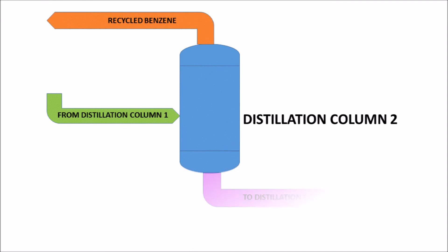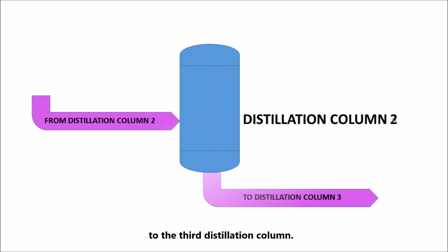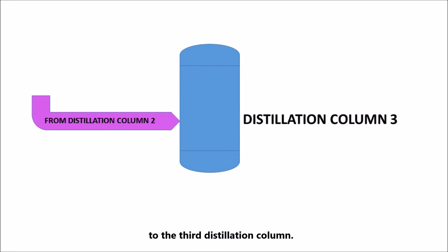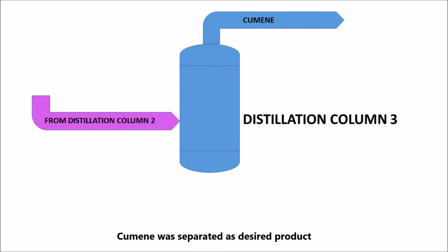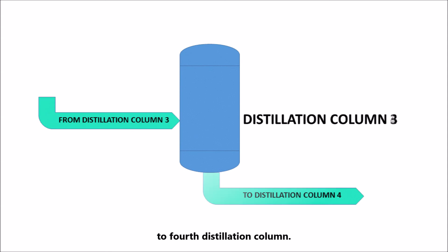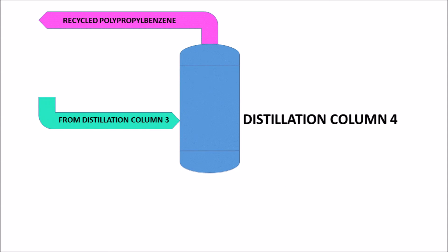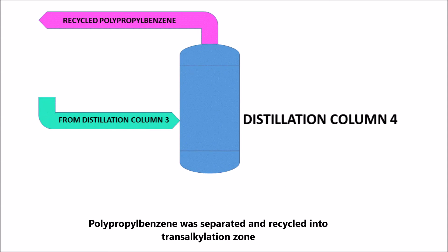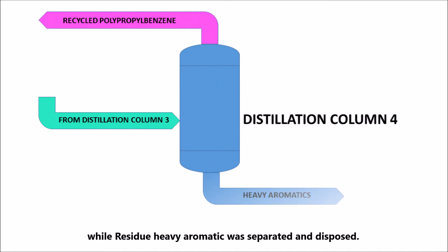Residue product was transferred to the third distillation column. Cumene was separated as the desired product, and residue product was transferred to the fourth distillation column. Polypropyl benzene was separated and recycled into the transalkylation zone, while residue heavy aromatics were separated and disposed.